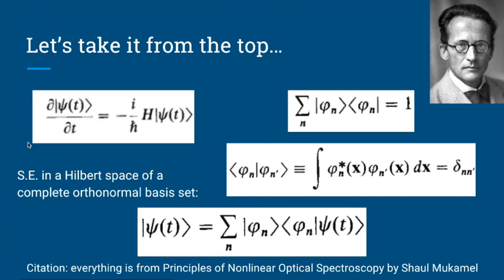Here we have the Schrödinger equation on the left. We have an orthonormal basis set of n basis functions, and their outer product forms the identity. Their inner product is going to be a Kronecker delta function. So this basis is orthonormal — if you dot them with the same basis function you get one, and with any other basis function you get zero.